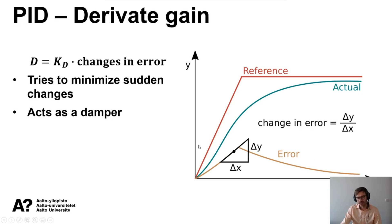This is the error during the entire time. I have tried to get this area in this beige or brown curve. Then the change in this error is the delta y divided by delta x. So then we get the change in the error. And then we have the gain KD to tune how much we want to have this derivative gain.